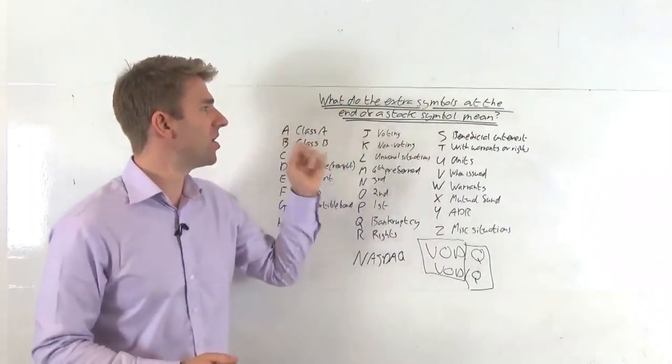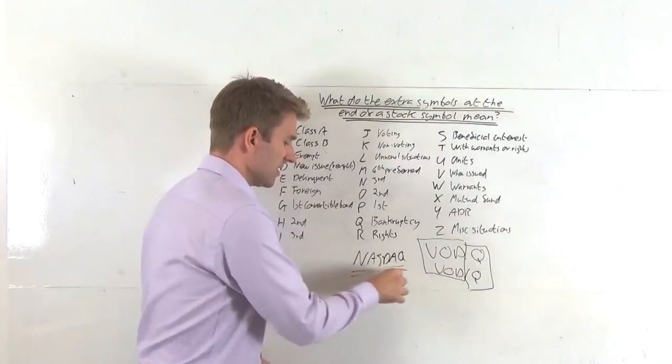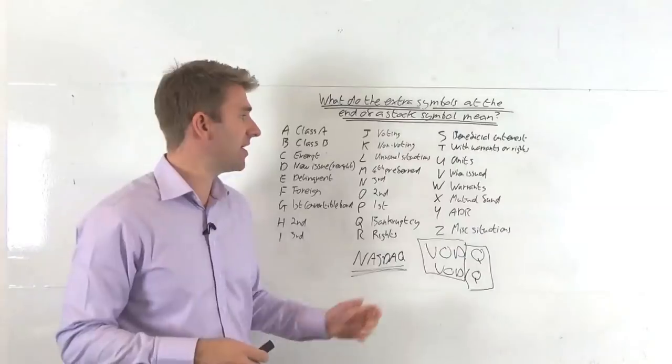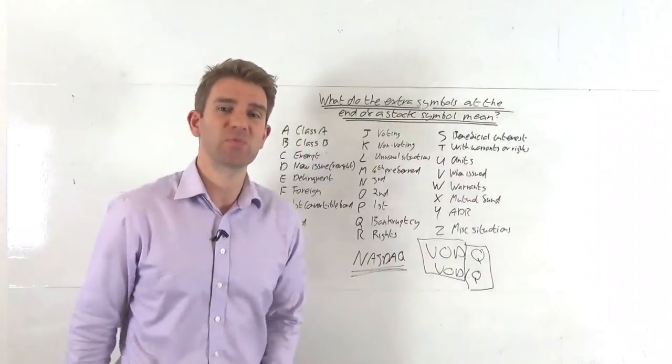So anyway, guys, those are the extra symbols at the end of a stock symbol. That's specifically for the NASDAQ. Like I say, there are other exchanges out there with different things, but A to Z, NASDAQ, symbols at the end of it. Take care, whatever you're doing, and see you next one. Goodbye.